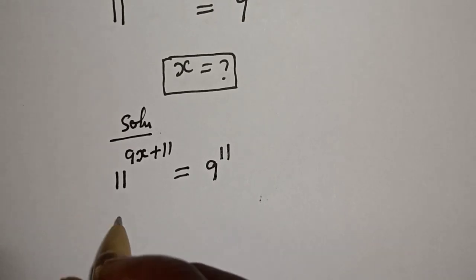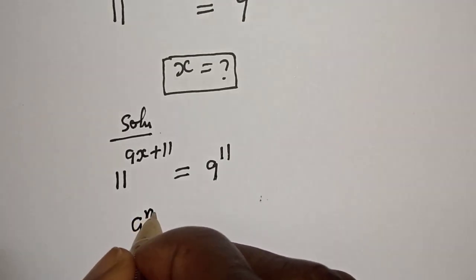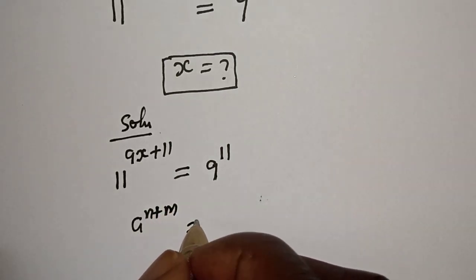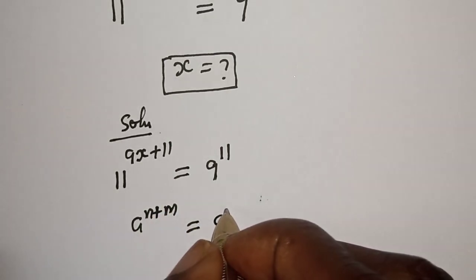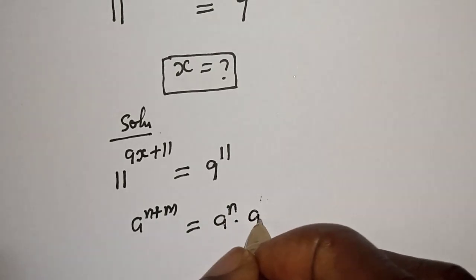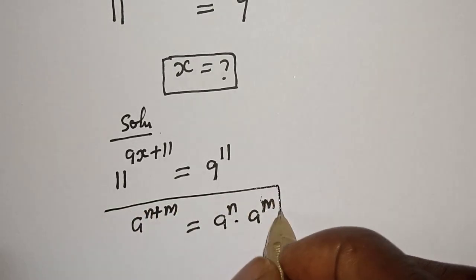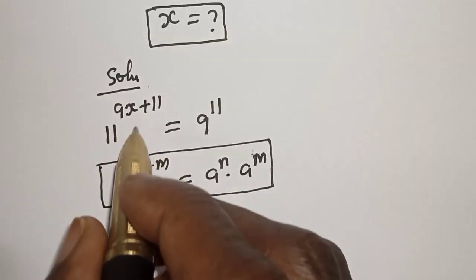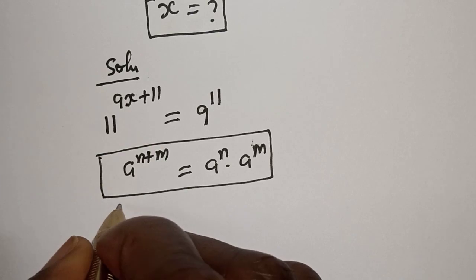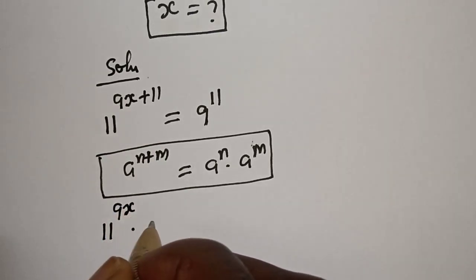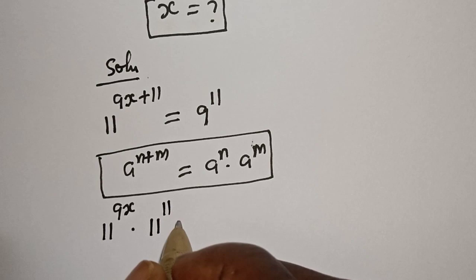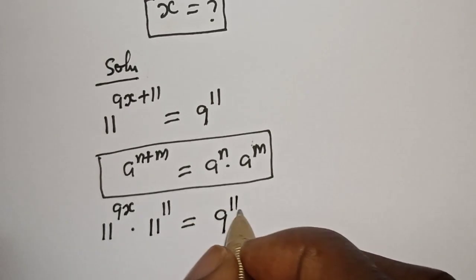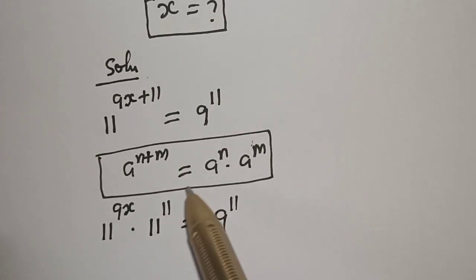If you have a raised to power n plus m, this equals a raised to power n multiplied by a raised to power m. Using this rule, the equation can be written as 11 raised to power 9s multiplied by 11 raised to power 11, is equal to 9 raised to power 11.